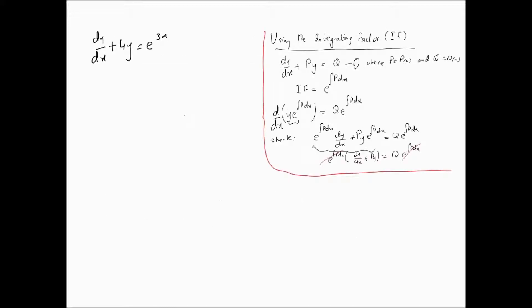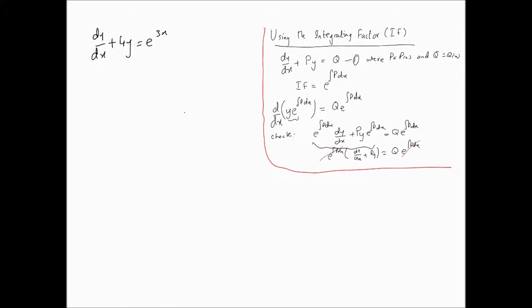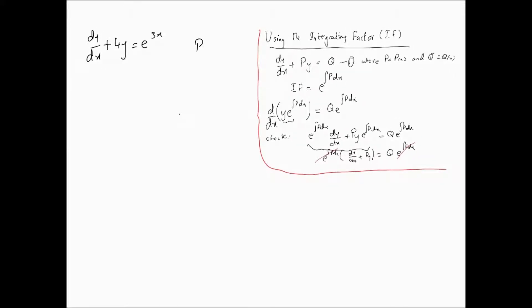Now let's use it. Comparing to our equation in this example — dy/dx + 4y = e^(3x) — we know this is a first-order ordinary differential equation; it is linear, non-homogeneous, and has constant coefficients. The integrating factor only requires it to be a first-order linear differential equation. Here, P equals 4, which means our integrating factor is e^(∫4 dx) = e^(4x).